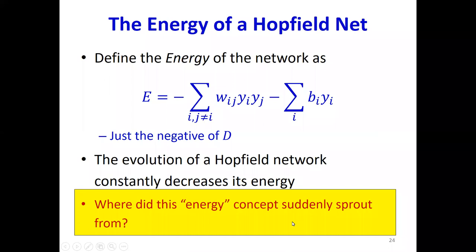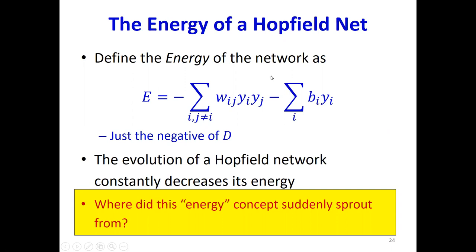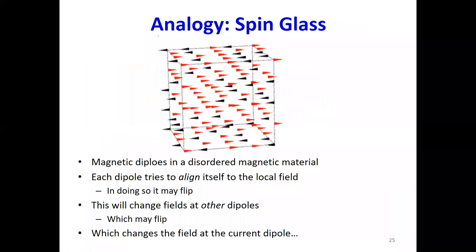Where did this term 'energy' come from? It turns out this model is very similar to a well-known model in physics called the Ising model. In a dielectric material, every little molecule is basically a dipole, and these dipoles have a direction — they have little magnetic fields. At every dipole there is a local field, which is the result of the magnetic influences from all the other dipoles in the material.